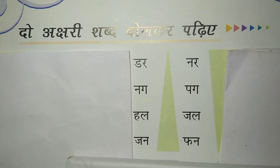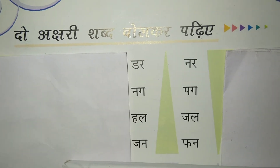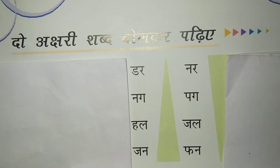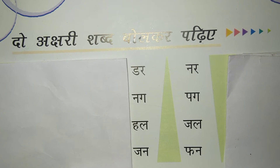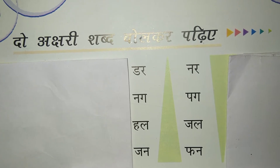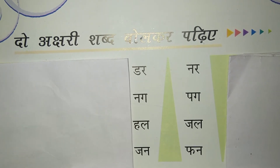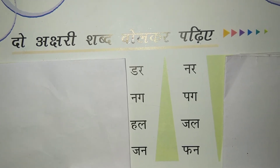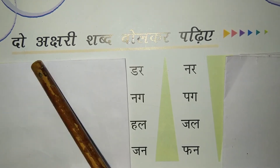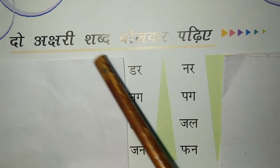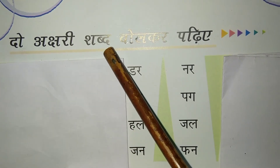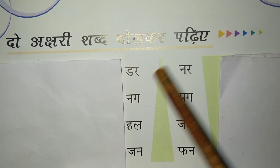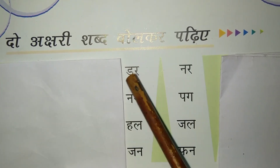Hello children, in Hindi, today you have to write do akshar wale shabd. See here — do akshar — akshari shabd bol kar padhiye. Two letter words, children.